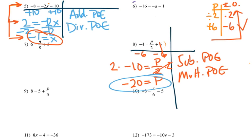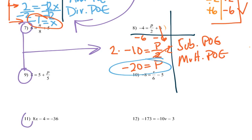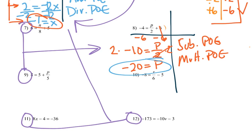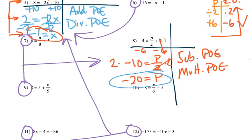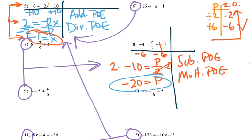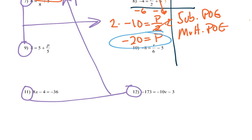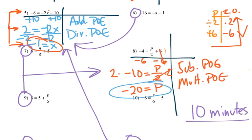Now let's give ourselves 10 minutes to work on numbers 6, 9, 11, and 12. Number 6 is like number 5; 7 and 9 are like number 8; 11 and 12 are also like number 5. Please have the guest teacher pause this video and work on all of these problems for about 10 minutes. If you finish, try to move on ahead. I'll leave the examples up — pause the video right now.